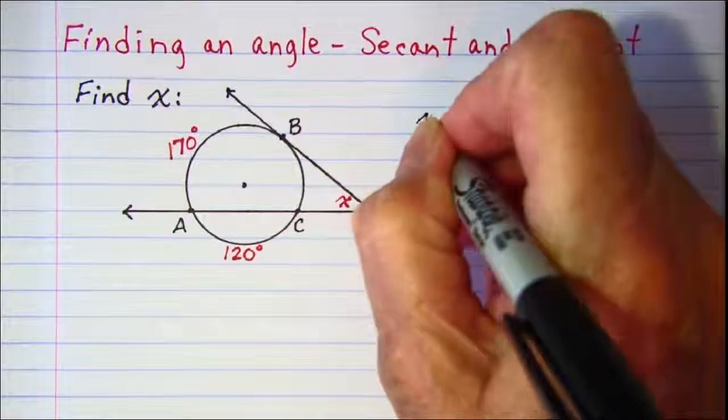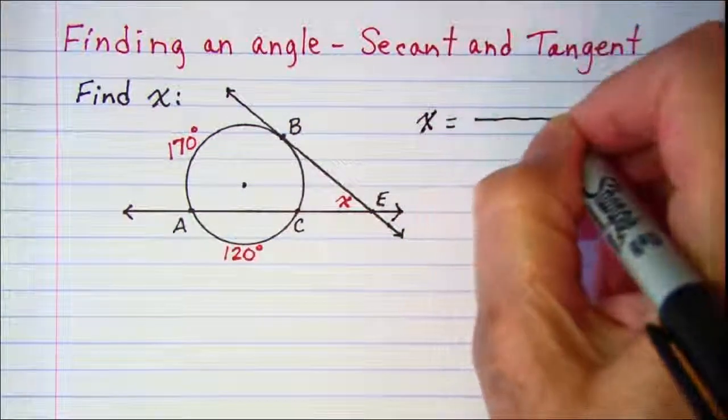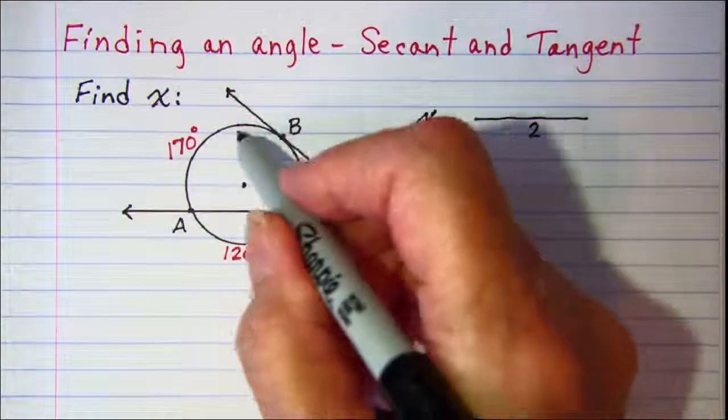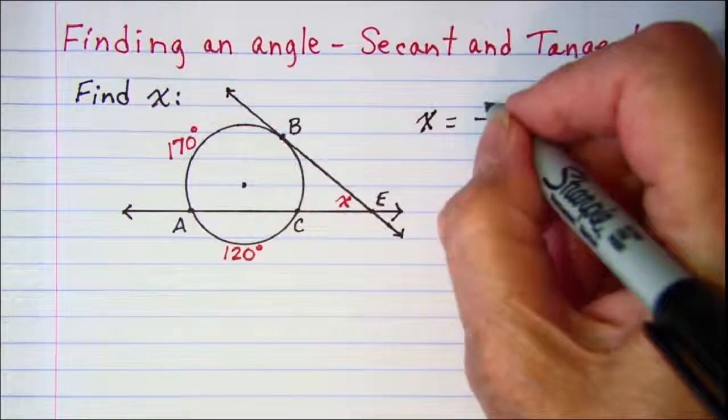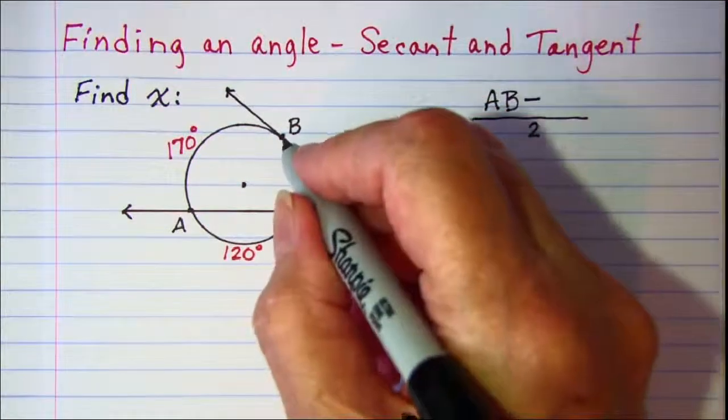So x will be equal to half of AB subtract BC.